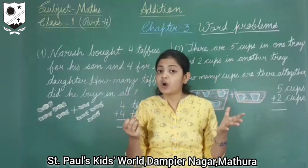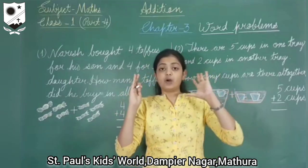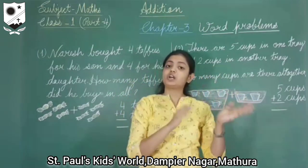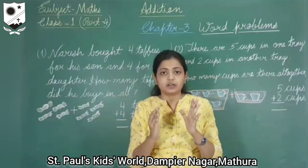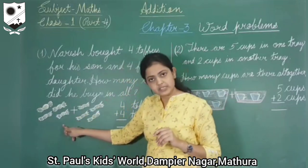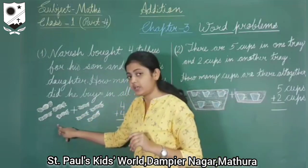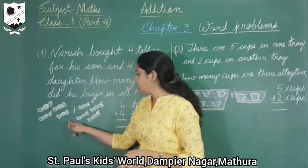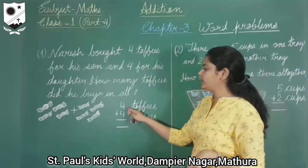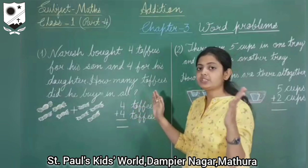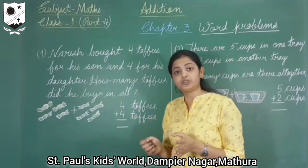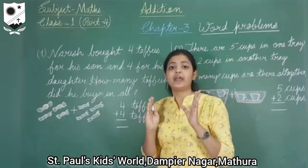We are asking how many toffees in all he bought. We are going to count the toffees he bought for his son and the toffees he bought for his daughter, and add them together to get the answer. So we are going to perform addition here.